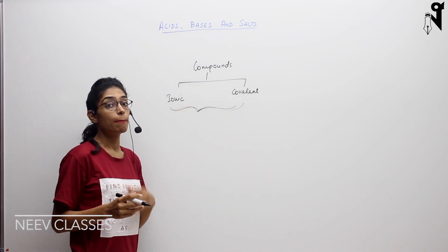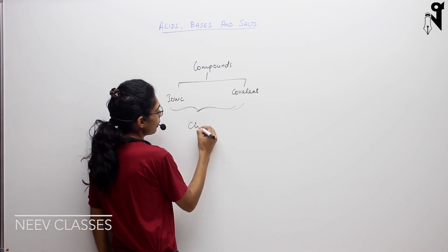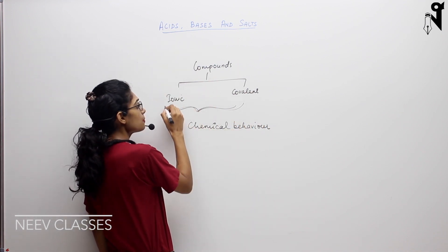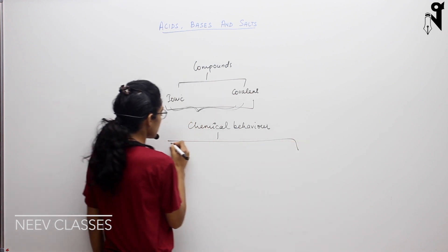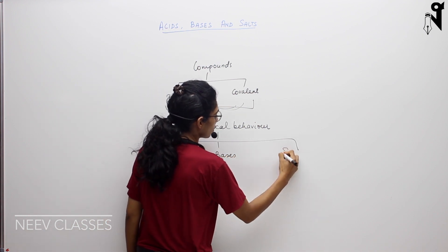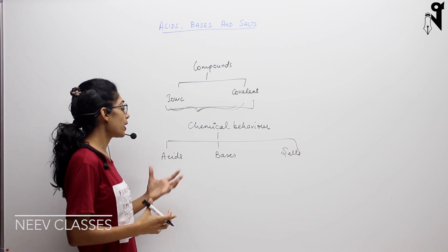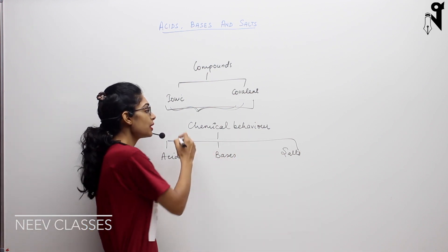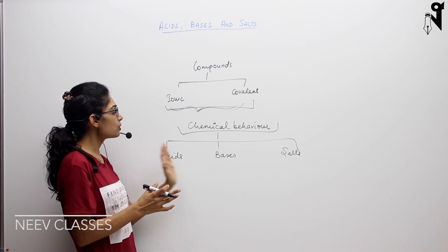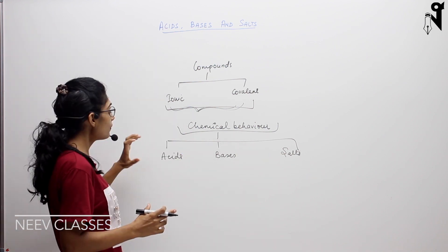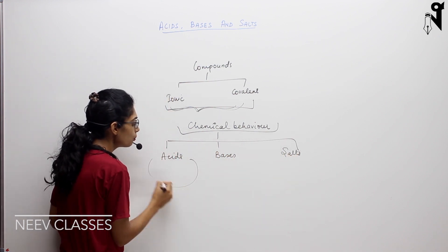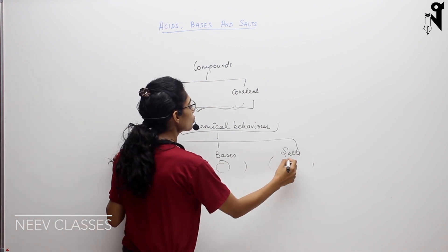Depending on their chemical behavior, we can further divide our compounds — irrespective of whether they are ionic or covalent — into three categories: acids, bases, and salts. So basically all compounds can be classified into these three categories depending upon their chemical behavior. Acids is a group of compounds, bases is also a group of compounds, and salts are also a group of compounds.